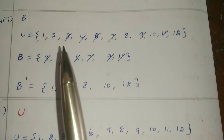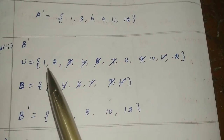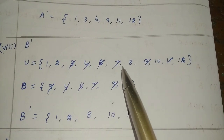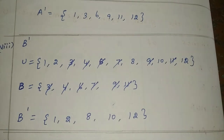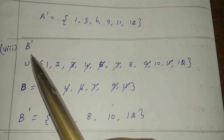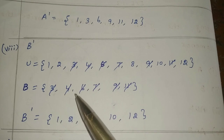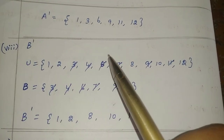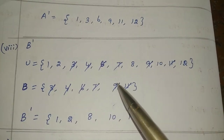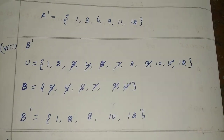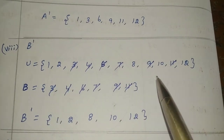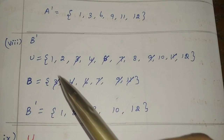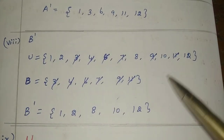Now B complement. The universal set is: 1, 2, 3, 4, 6, 7, 8, 9, 11, 12. B values are: 3, 4, 6, 7, 9, 11. We cancel the common elements — 3, 4, 6, 7, 9, 11. The universal balance is B complement: {1, 2, 8, 10, 12}.